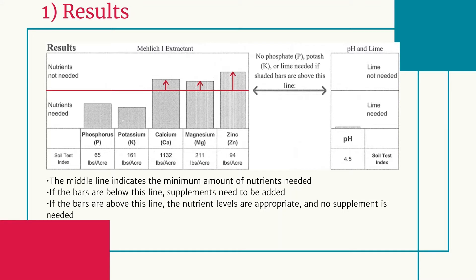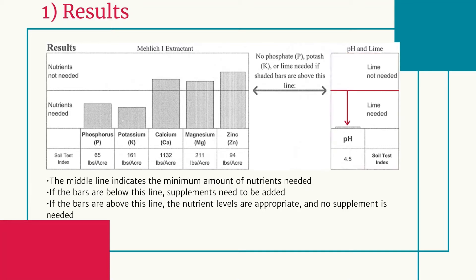If you look all the way on the right, you'll see a pH graph. This is the same format as the nutrients. If the bar is above that middle line, it means that your pH is good and you do not need to add any more lime. If the pH is below the central line, it means that the pH is acidic and you need to put limestone out in your garden to neutralize some of that acidity.